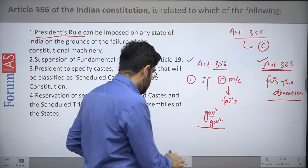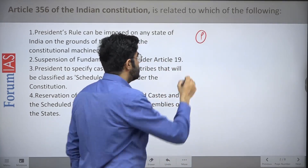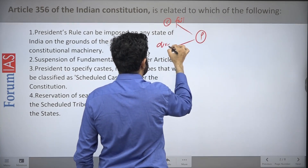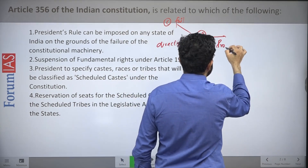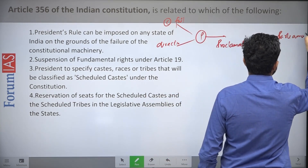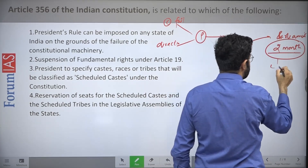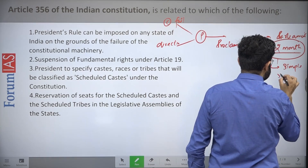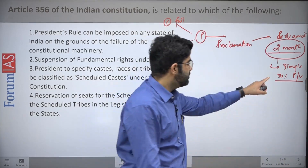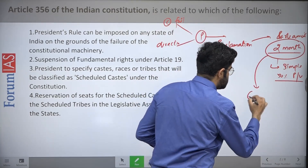Let's discuss the exact procedure. After being satisfied with these two conditions — constitutional machinery failure and non-compliance with directions — the President issues a proclamation. This proclamation must be passed by Parliament within a period of two months. The majority required is simple majority, that is 50% plus one of members present and voting.